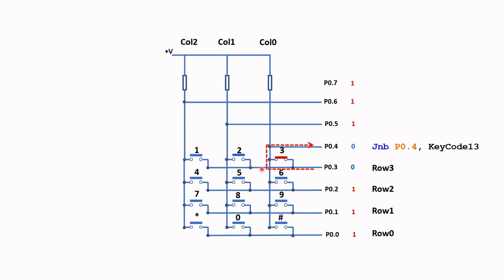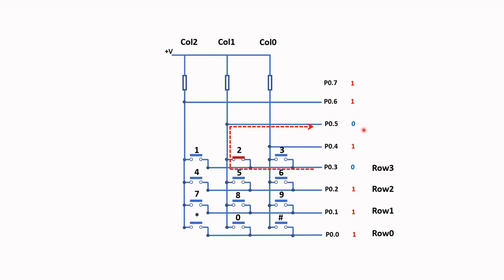Let's look at the other two keys. Assume key number 2 is pressed — we get a connection to P0.5, which sets P0.5 to zero. Again we can use the JNB instruction to test that bit; if it's zero, we go to the subroutine to display number 2 on the 7-segment. We keep P0.3 at zero throughout.